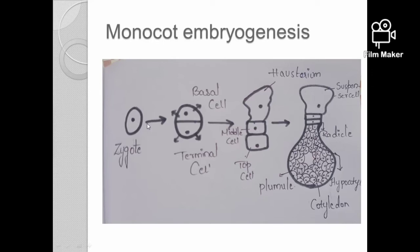In monocot embryogenesis, the zygote undergoes a first mitotic division forming two cells: the basal cell and the terminal cell. The basal cell forms the haustorium, which becomes enlarged. The terminal cell divides to form a middle cell and a top cell. The middle cell undergoes repeated mitotic division to form the radicle and hypocotyl. The top cell undergoes repeated mitotic division to form the plumule and cotyledon.